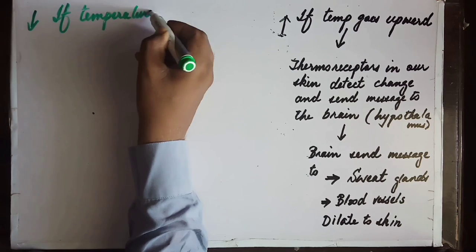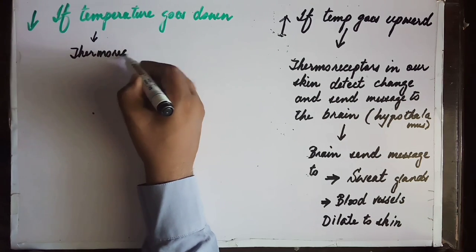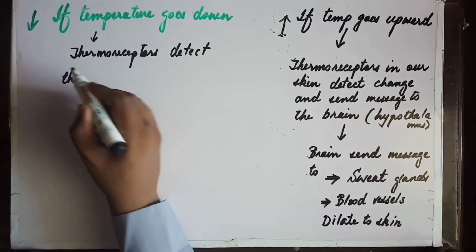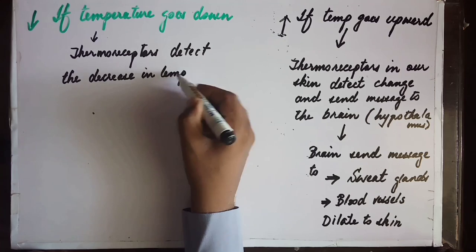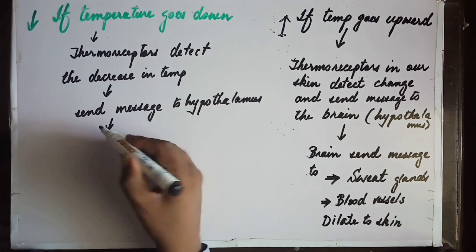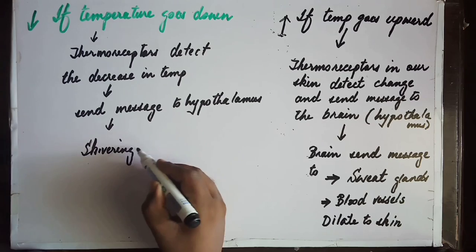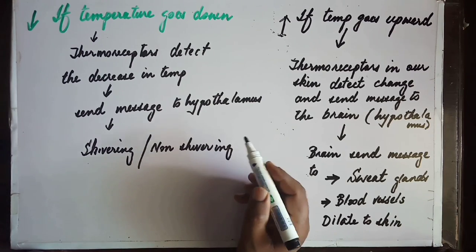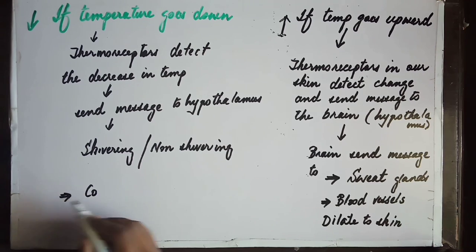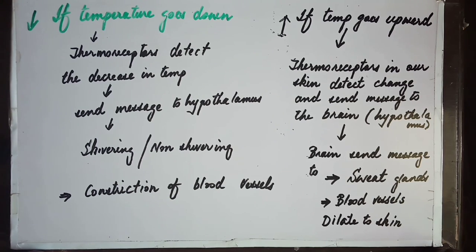The second condition is: if the temperature goes down — below this range — then thermoreceptors in our skin detect the decrease in temperature and send the message to the hypothalamus. The hypothalamus then performs the necessary actions: shivering thermogenesis or non-shivering thermogenesis (which we studied in previous lectures) to raise the temperature. Second, vasoconstriction occurs — the blood vessels constrict — preventing heat loss from the skin.